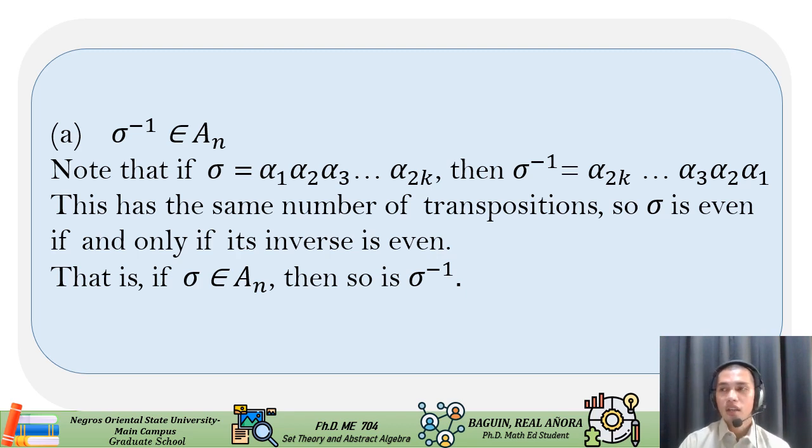Thus, the inverse of a product of even permutation, using the general formula for the inverse of a product, is the product of the same transpositions in reverse order, and hence is even again. So, that is, if sigma is in A sub n, then so is sigma inverse.